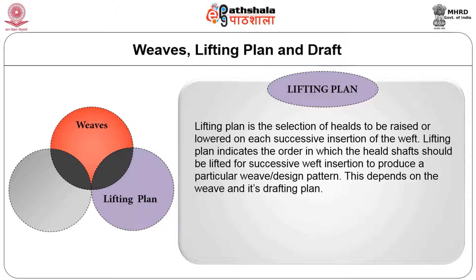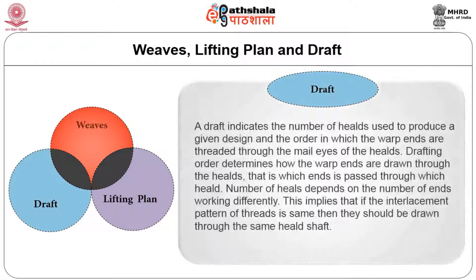The drafting plan determines the number of heels required to produce a design, depending upon the number of ends working differently, which determines the number of heel shafts. Drafting order determines how the warp ends are drawn through the heels — that is, which end passes through which heel. The number of heels depends on the number of ends working differently. This implies that if the interlacement pattern of a thread is the same, they should be drawn through the same heel shaft.